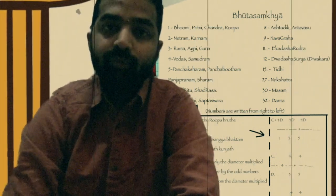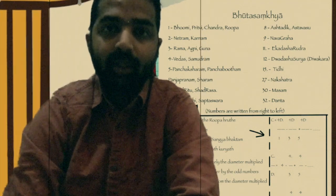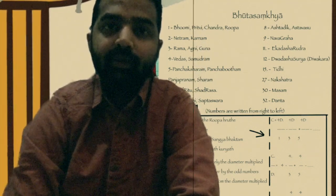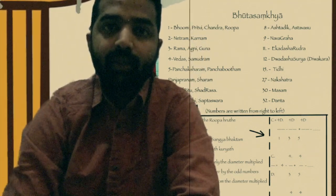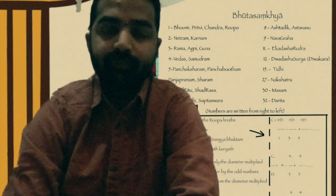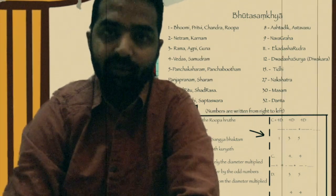Panchabhoota represents number 5. Panchaprana — Prana represents number 5: Pranan, Apanan, Jnanan, Udhanan, Samanan. Shara also represents number 5.